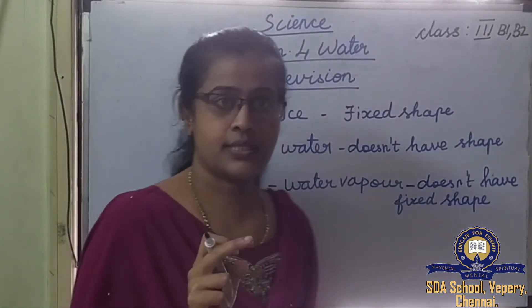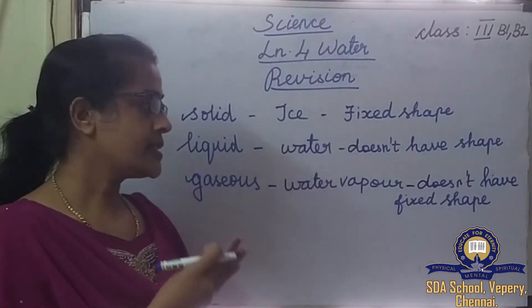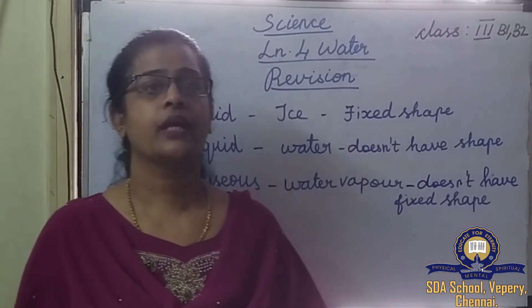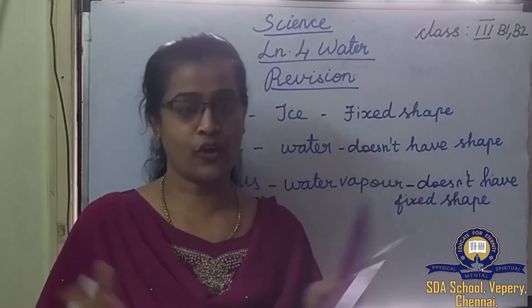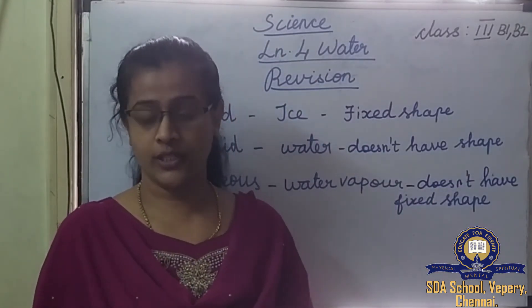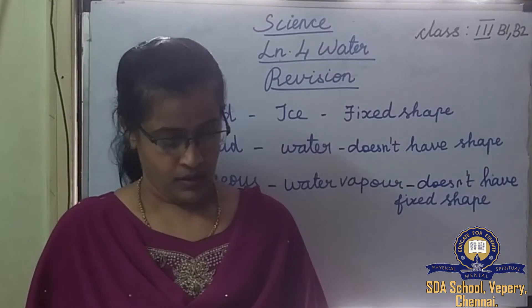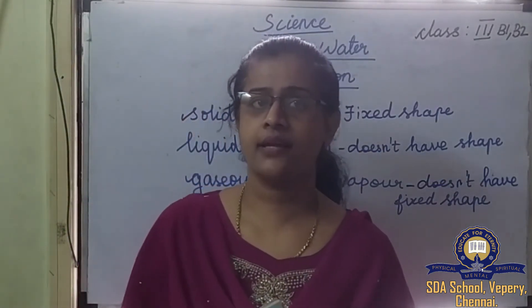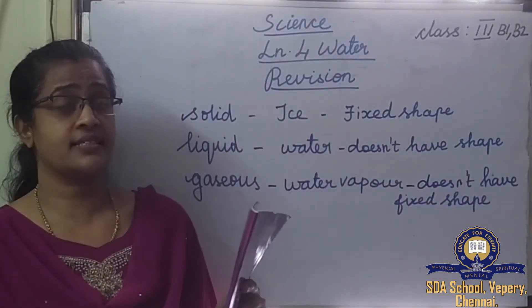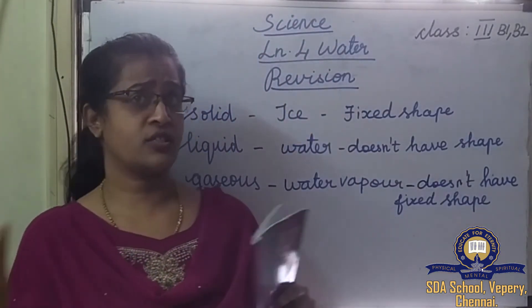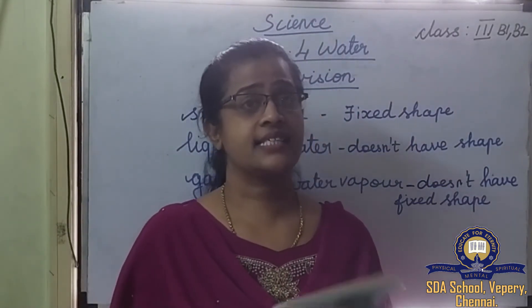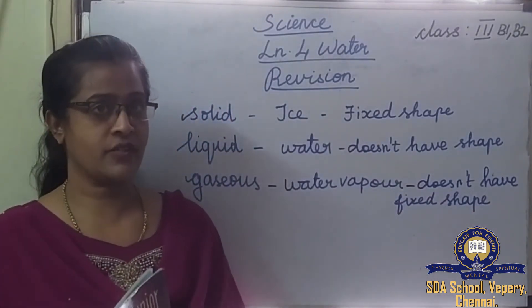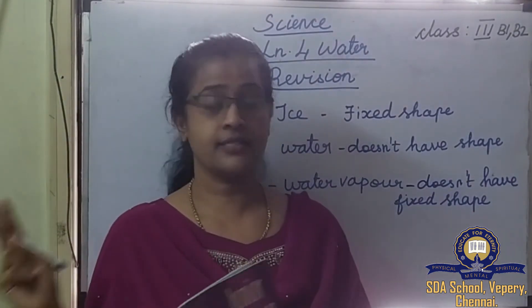Only solids have fixed shapes; liquids and gases do not have a fixed shape. Moving on to page number 20 — air is a gas, a mixture of gases. The gases in the air include hydrogen, oxygen, and nitrogen. Air too does not have a shape. Only solids have fixed shapes; liquids and gases do not.